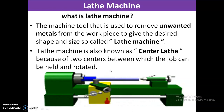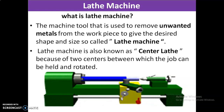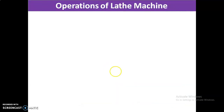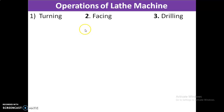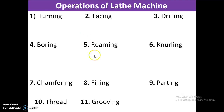The general operations performed on the lathe machine are: turning, facing, drilling, boring, reaming, knurling, chamfering, filing, parting, threading, and grooving. These are the general operations of the lathe machine.